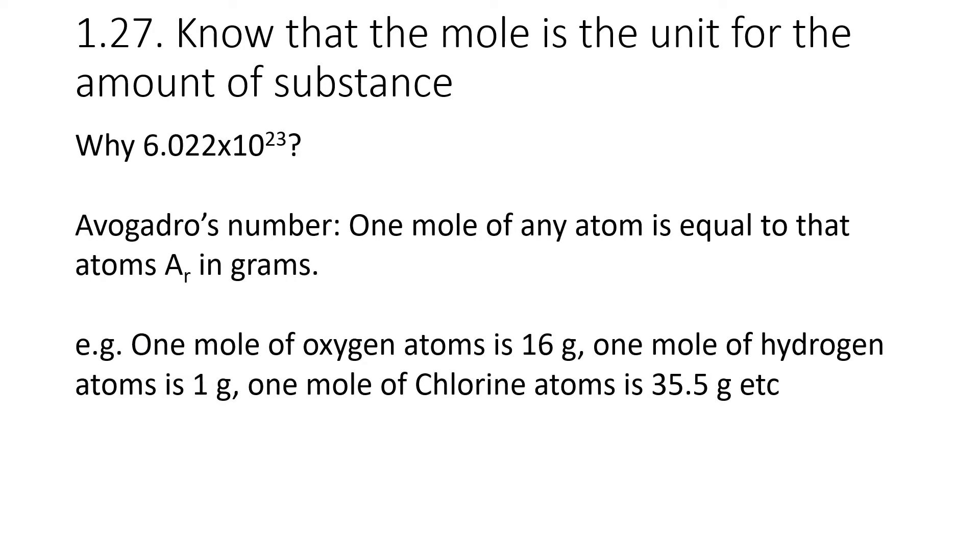But why do we use that number specifically? This number is known as Avogadro's number, and it has quite a special meaning. If you take one mole of any atom in the periodic table, you would find that you have that element's mass in grams, its relative atomic mass in grams. For example, if you have one mole of oxygen atoms, that weighs 16 grams. One mole of hydrogen atoms would be 1 gram. And one mole of chlorine atoms would be 35.5 grams.